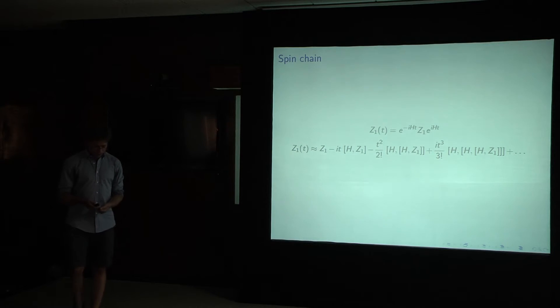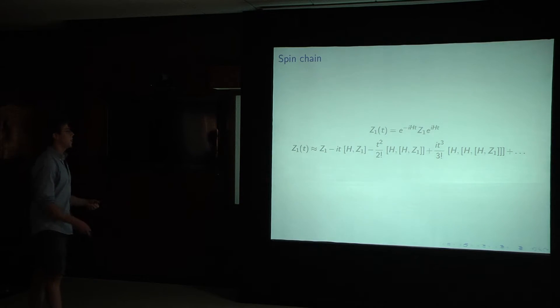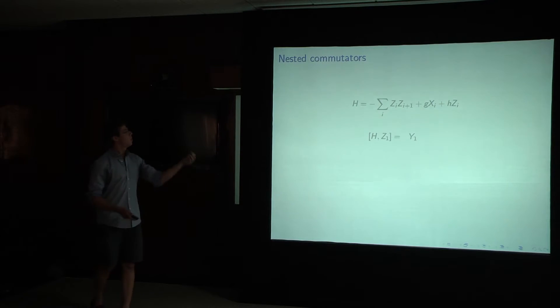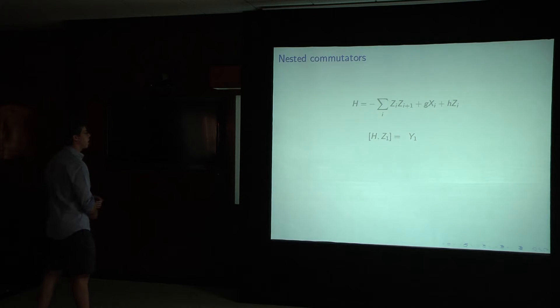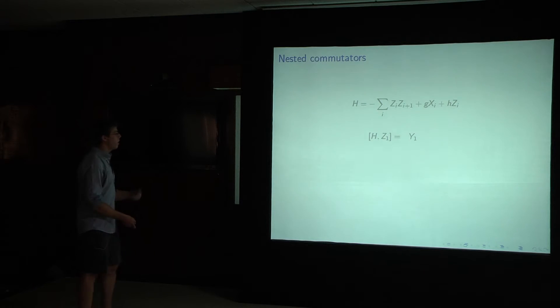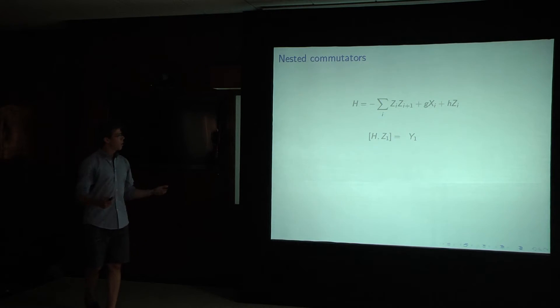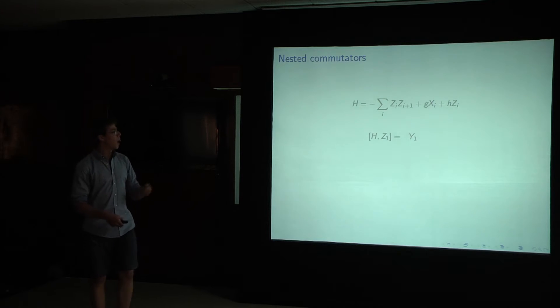In this simple example, what's nice is that we can just attack this directly and to get some intuition for what's happening in this expansion. So let's consider these nested commutators. I start with z1. I commute it with h. It commutes with every term except for that term. And the action of this is to flip it and make it a y.